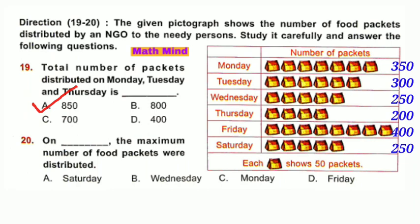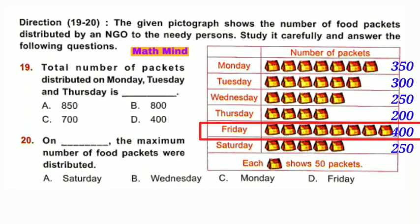Question number 20: On which day were the maximum number of food packets distributed? Clearly, the maximum number of food packets were distributed on Friday, that is 400. Option D is correct.